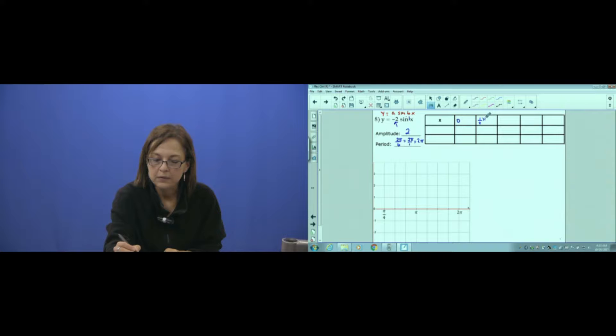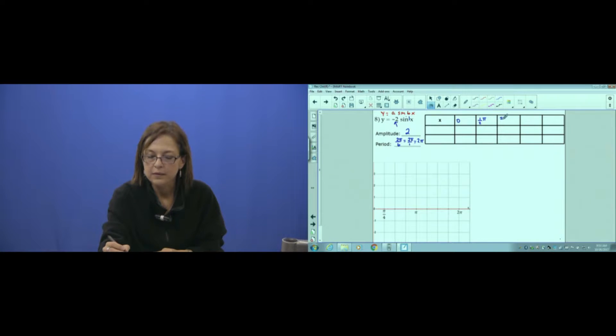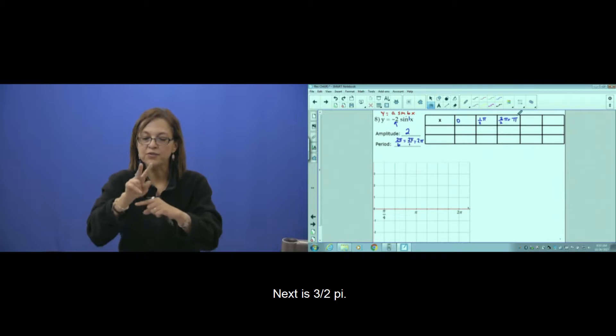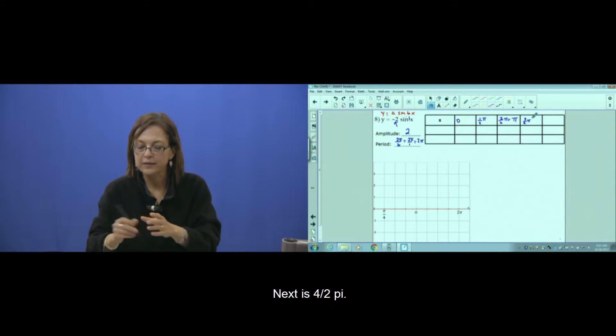The next 2 halves of π equals π only. The next is 3 halves of π, and the next 4 halves of π.